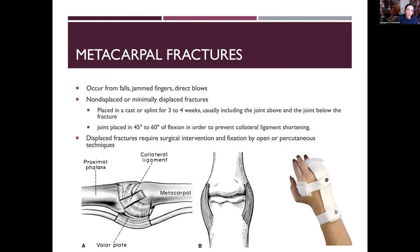Metacarpal fractures occur from falls, jammed fingers, or direct blows. Non-displaced fractures are placed in a cast or splint for three to four weeks, including the joint above and below the fracture. The joint is placed in 45 to 60 degrees of flexion to prevent collateral ligament shortening — those collateral ligaments are in a shortened position when the MCP is extended, so flexion prevents stiffness after cast removal.